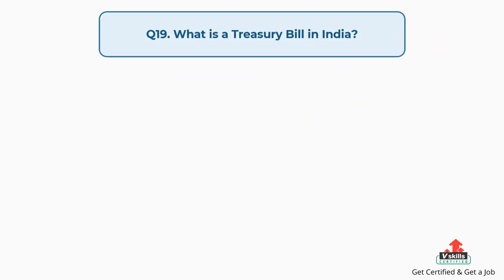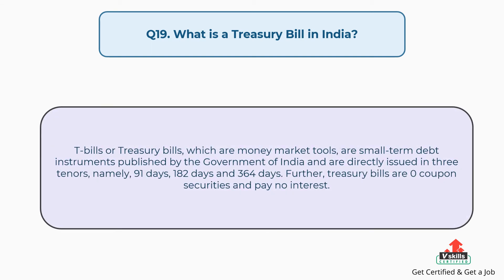Question number nineteen: what is a treasury bill in India? The answer is, treasury bills, which are money market instruments, are short-term debt instruments issued by the Government of India and are directly issued in three tenors, namely 91 days, 182 days, and 364 days. Further, treasury bills are zero coupon securities and pay no interest.